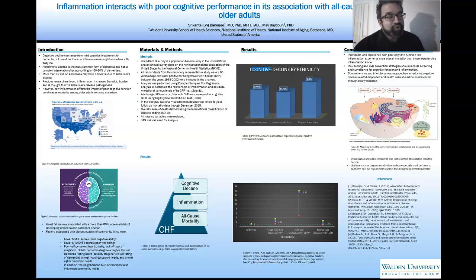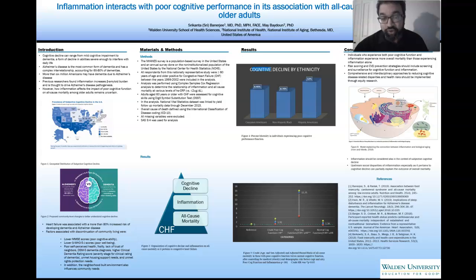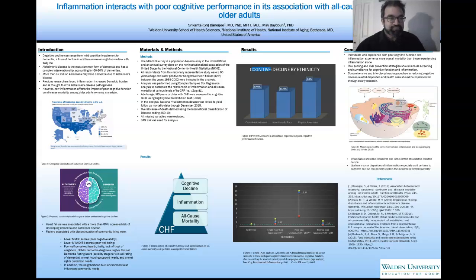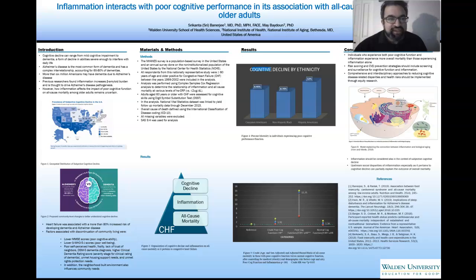It's important to know that there are a whole range of cognitive decline. To understand more specifically, Alzheimer's disease is one of the most common forms of dementia, accounting for about 60 to 80% of all dementias. Six million Americans suffer from dementia due to Alzheimer's disease. What is really not known is how precisely inflammation affects the impact of poor cognitive function on all-cause mortality, and how this happens in older adults — this is uncertain.